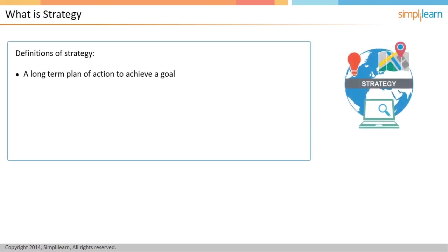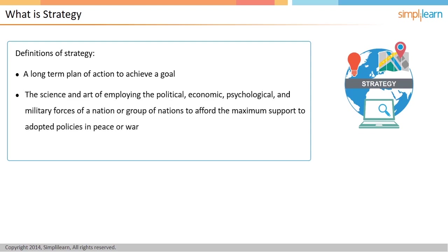Strategy is a long-term plan of action to achieve a goal. The word strategy has its origins in military missions. Strategy was used as a way of deploying various means to support the policies of a nation. One of the central ideas of strategy is that it refers to a plan to reach a definite goal. Strategy can also be defined as the science and art of employing the political, economic, psychological, and military forces of a nation or group of nations to afford maximum support to adopted policies in peace or war.